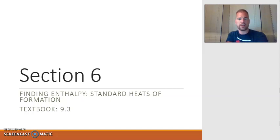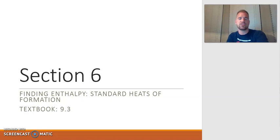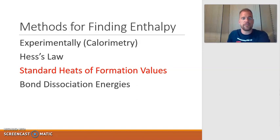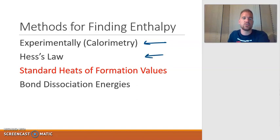Continuing our adventure of enthalpy, we get to section 6, which is finding enthalpy using standard heats of formation. To remind us where we've been: we first looked at how to determine enthalpy using an experimental approach through calorimetry, and in the last section we looked at how to do it using Hess's law. Now we're going to look at how to find enthalpy using standard heats of formation.